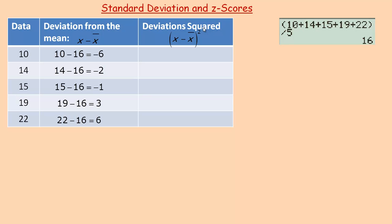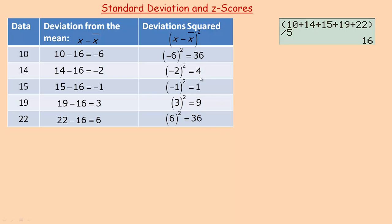What we need to do is square all those deviations squared. So I'm going to square negative 6, negative 2, negative 1 squared is 1. Notice when you square them, they all give you positive values, because a negative squared is still a positive. And so that's all the deviations squared.